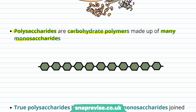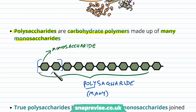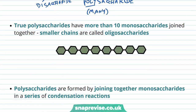A polysaccharide is basically a polymer of carbohydrates made up of many monosaccharides. Remember the simplest form of a carbohydrate is a monosaccharide. When we join lots of these up as monomers, we end up with one long chain, which we describe as a polysaccharide — poly meaning many. Two would be a disaccharide, but more than this we name as a polysaccharide. To be a true polysaccharide, they need to have more than 10 monosaccharides joined together; any smaller chains are called oligosaccharides.